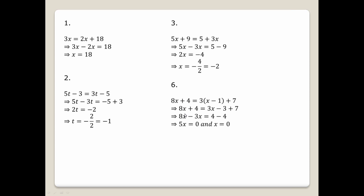Question number six: 8x plus 4 equals 3x minus 3 plus 7. Rearranging: 8x minus 3x equals 7 minus 3 minus 4. So 5x minus 4 equals 0.